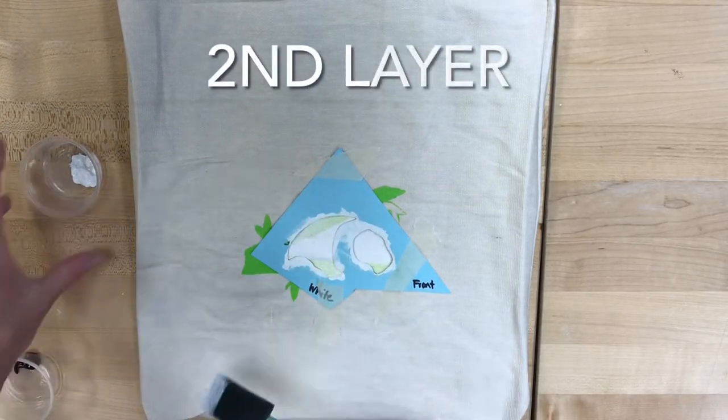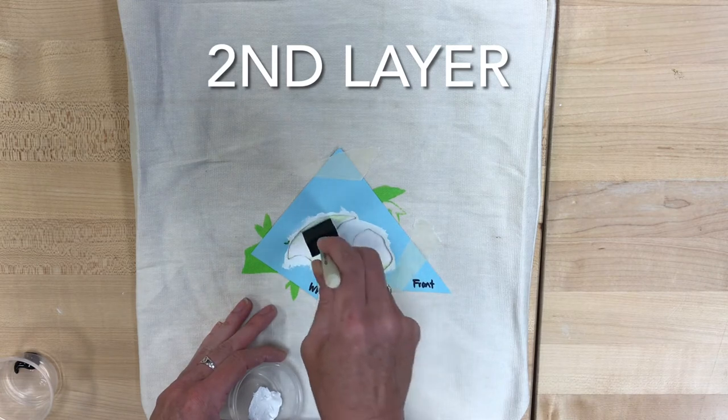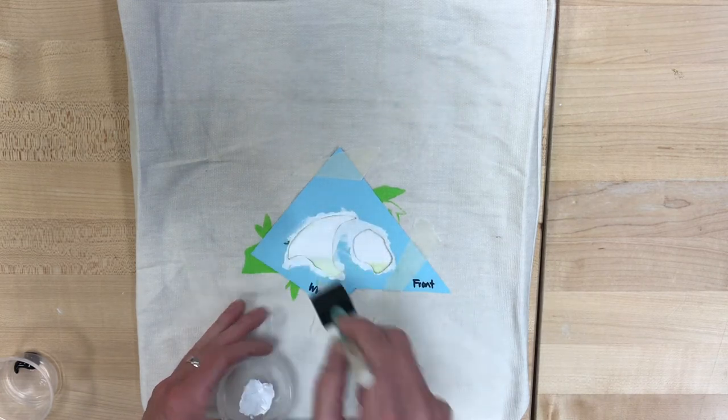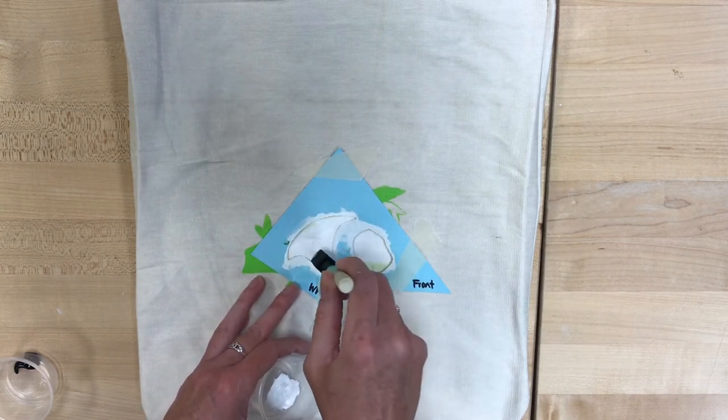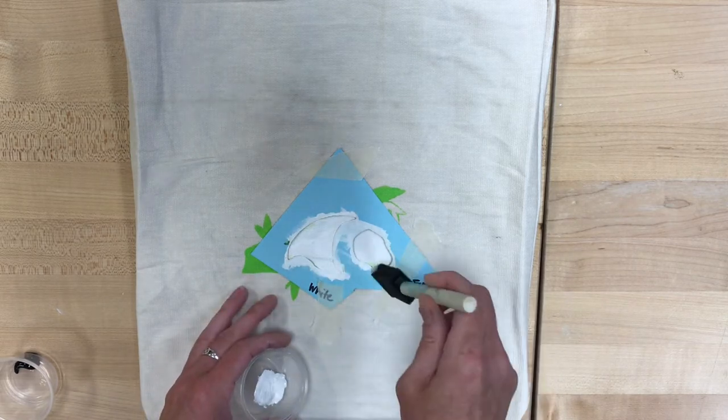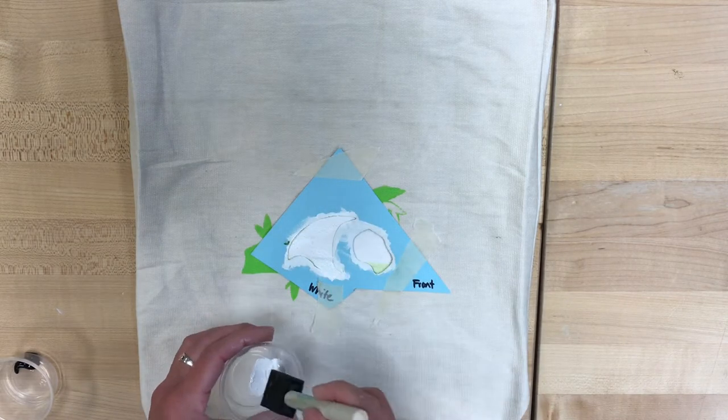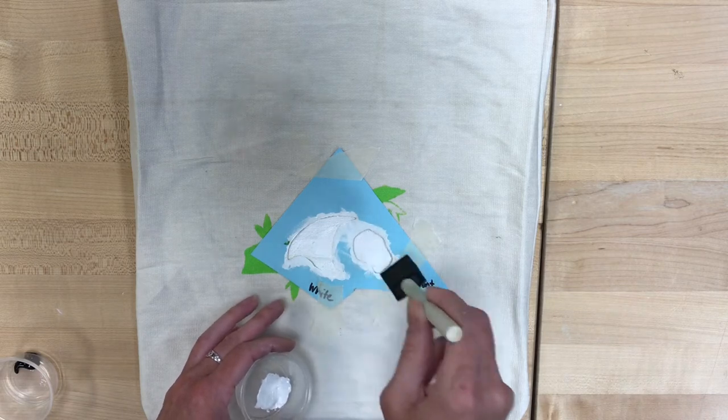And you can still see the green in there. So I'm gonna go ahead and put a second layer on. And you can dab it on pretty thick. Just like I said, be careful so that the paint doesn't squelch underneath the stencil because then it won't be the right shape.